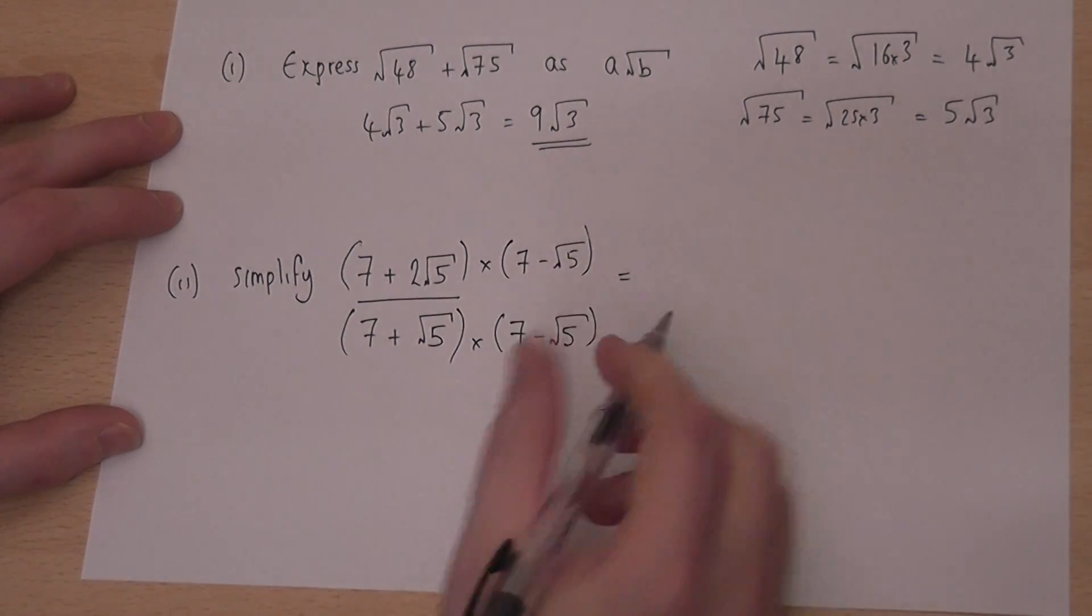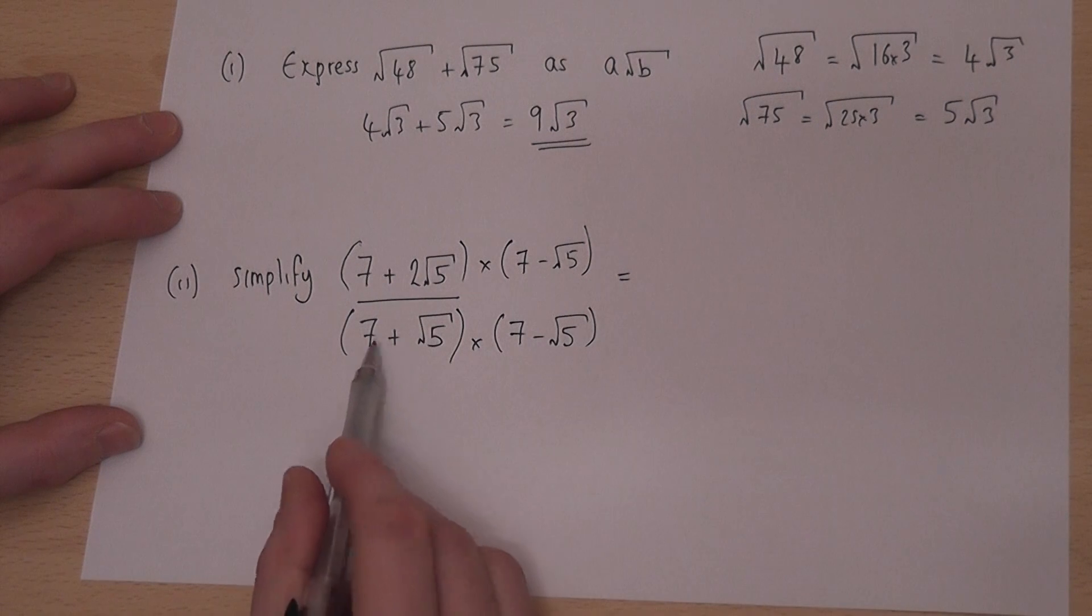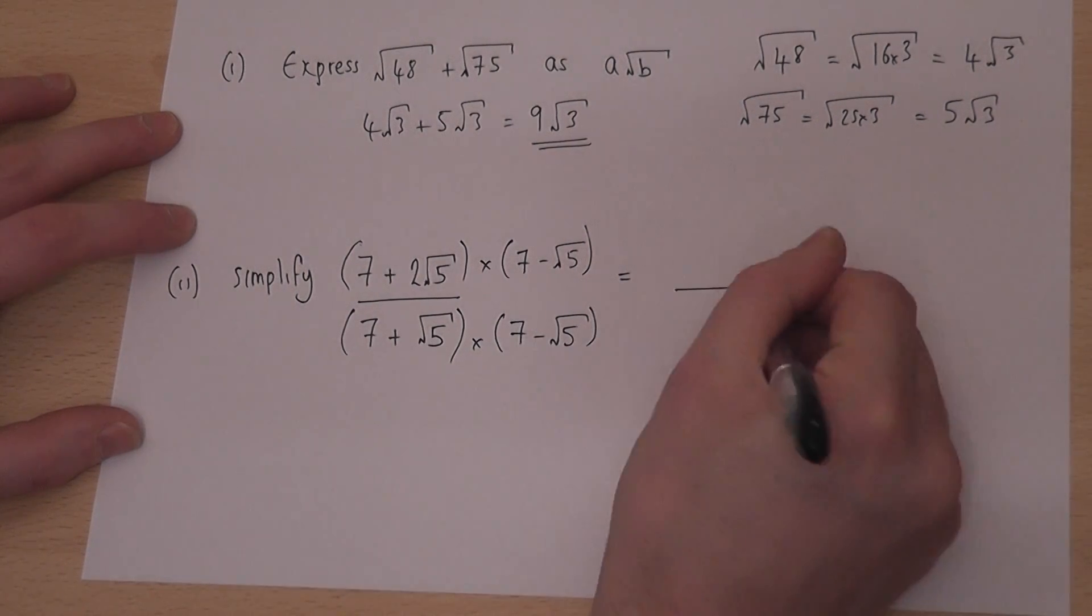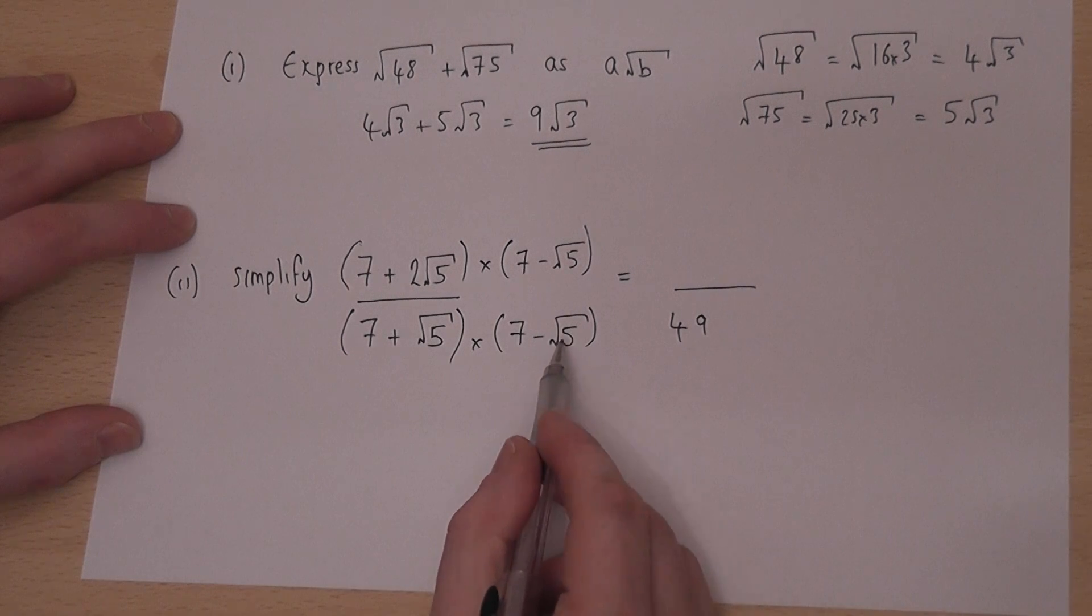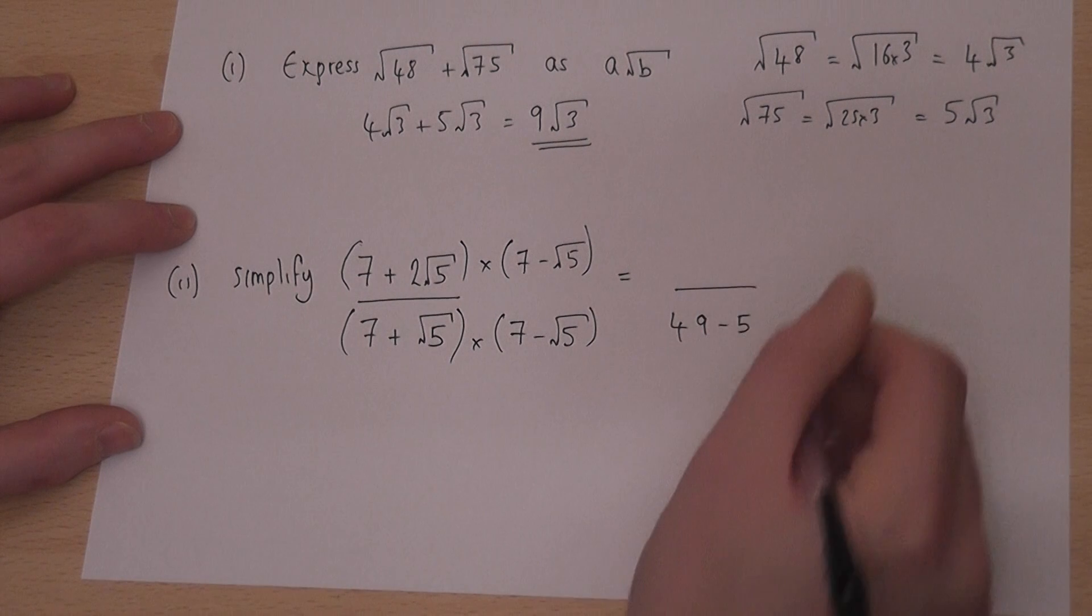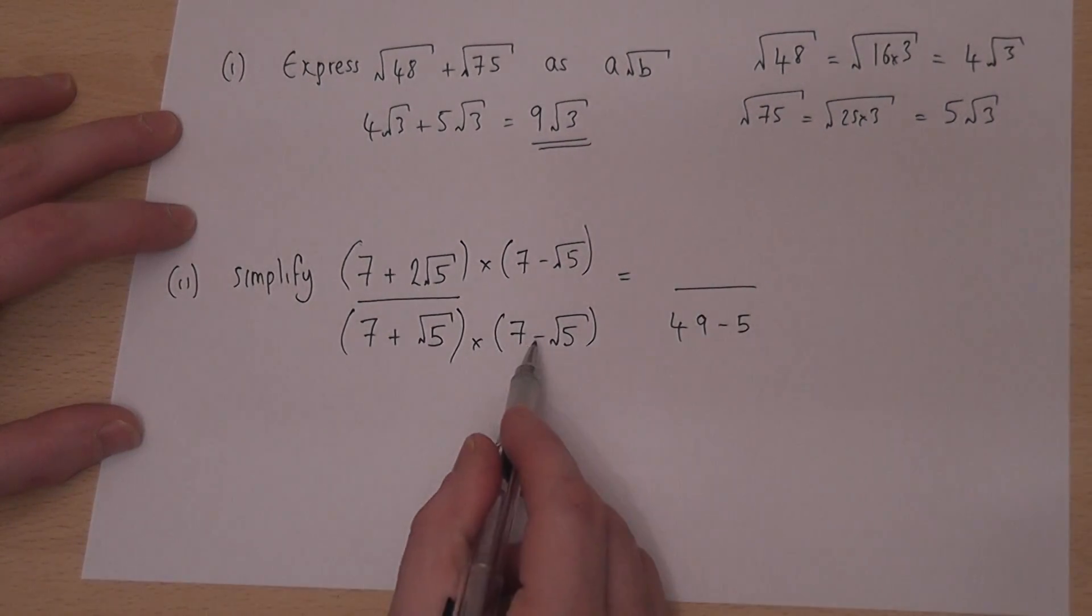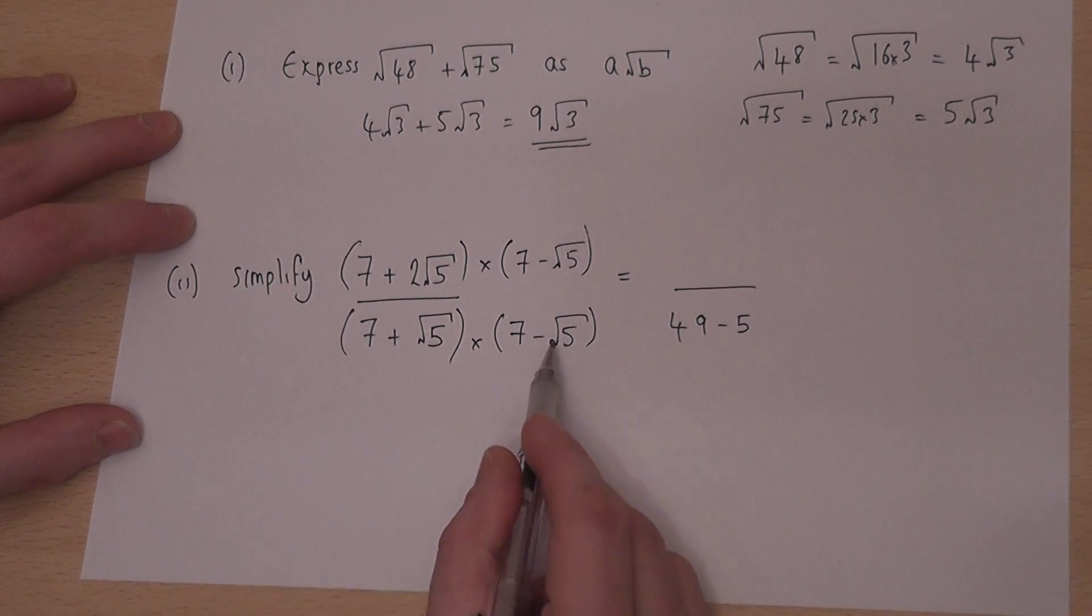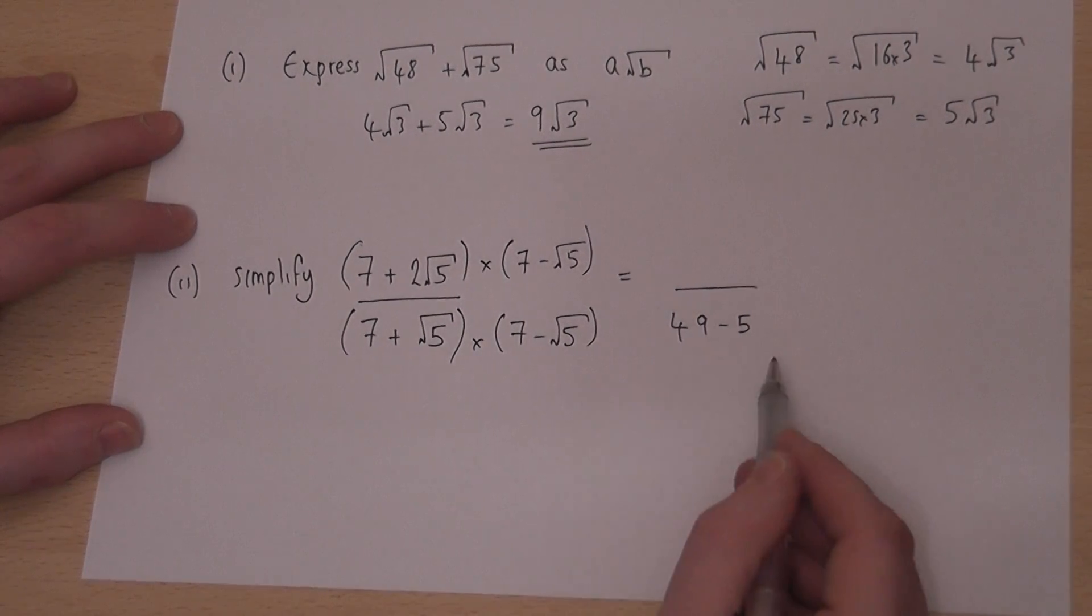Now we can work this out actually quite quickly because 7 times 7 is 49. Now root 5 times root 5 is just 5, there's a minus so it becomes minus 5. And the clever thing here is that the 7 root 5 and the minus 7 root 5 cancel out. So we're left with just 49 take away 5, which of course is 44.